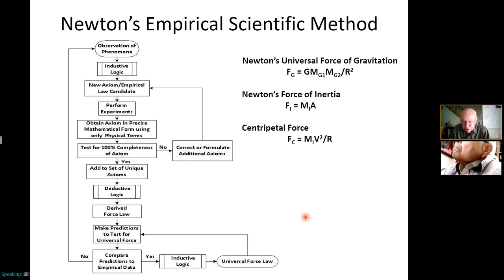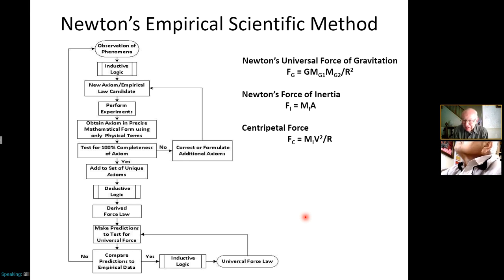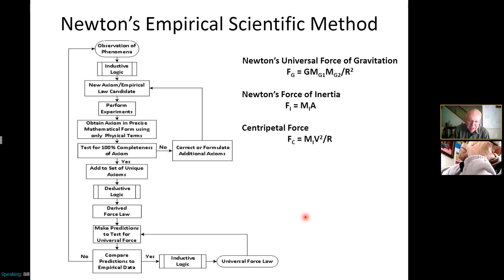Maxwell did it in terms of quaternions, which are kind of like matrices. At the time, no one else was doing much with matrices or quaternions in electrodynamics, so it wasn't very popular. After Maxwell died, one of his followers, Oliver Heaviside, redid it in terms of vectors, which were much simpler. However, he didn't use all of the equations — he only used four of the six — and found various ways to eliminate the extra terms from the empirical laws to obtain a solution.